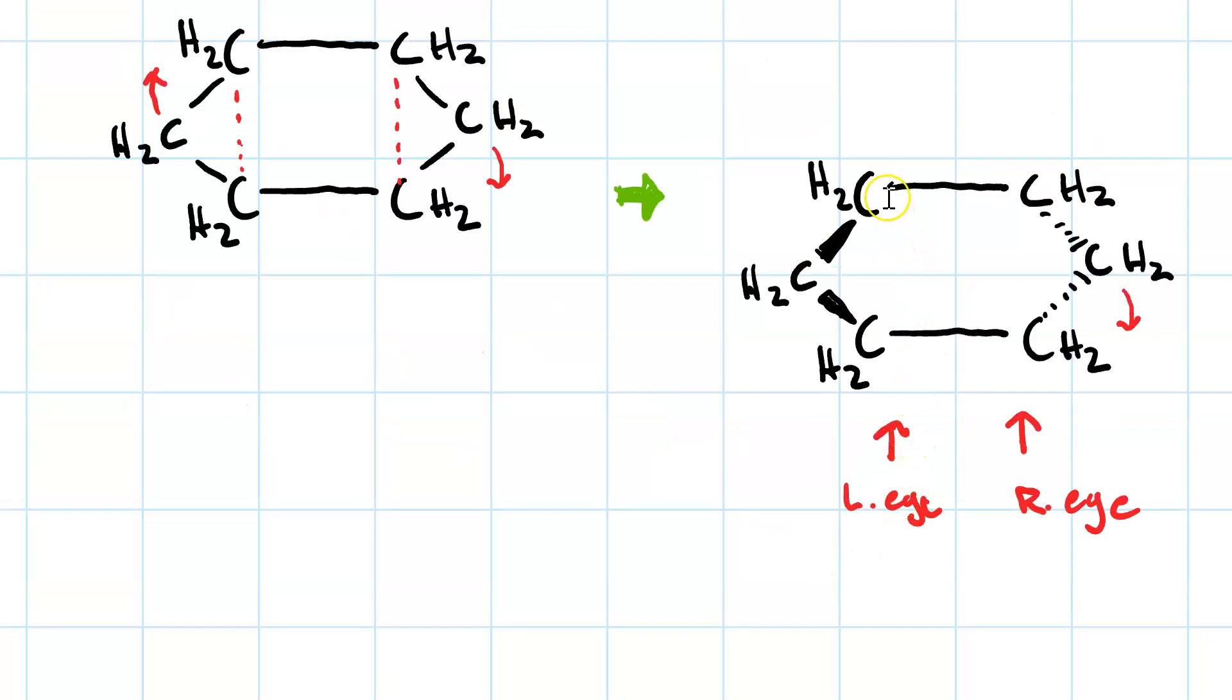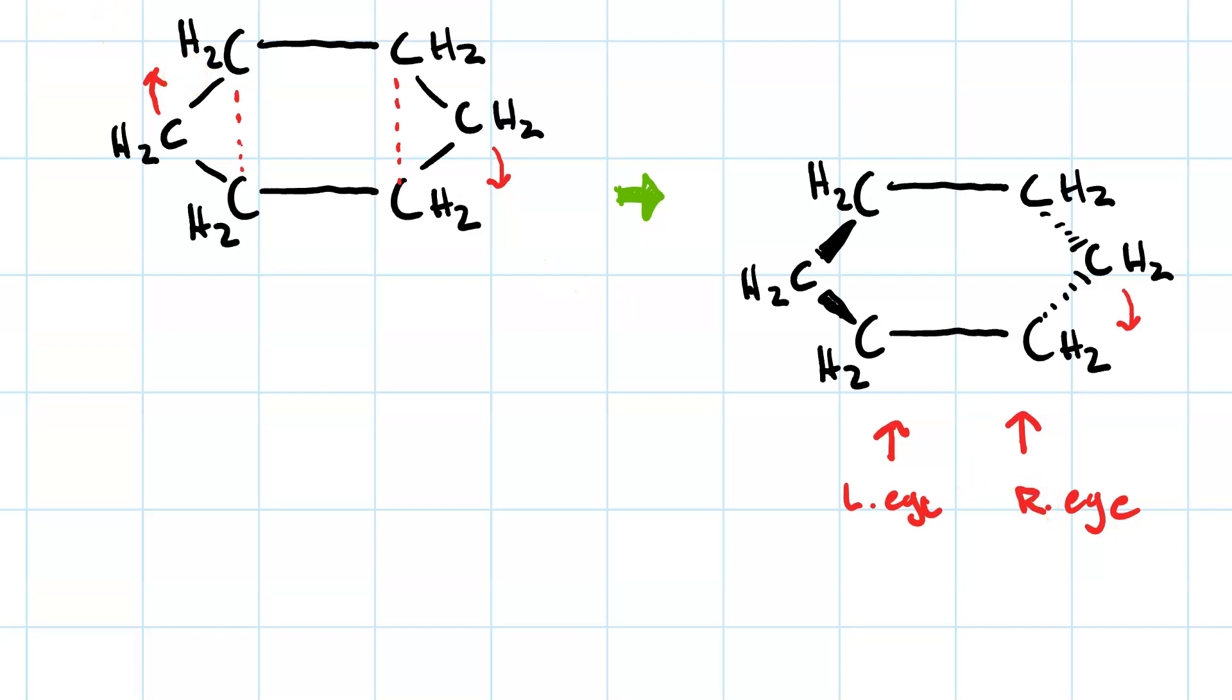Instead of looking down at it, if we look at it from the side, putting our left eye here and our right eye here, we can see the chair. Here's the bond line structure of the chair. The carbon that got folded down, or the footrest of the chair, is there. The carbon that got folded up, or the headrest, is there. You can see your knees go over that fold, and your butt sits down in that fold—it's like a poolside chaise lounge.